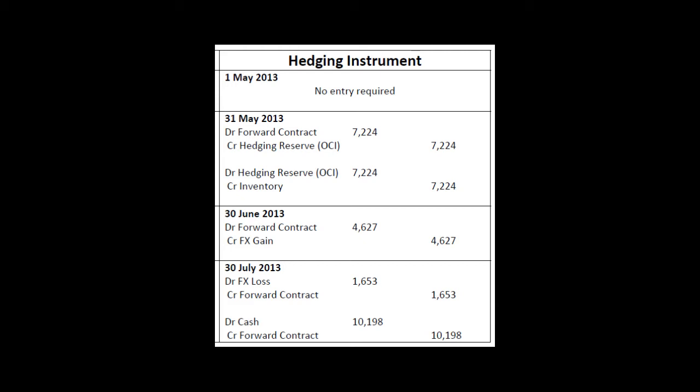So what we have is actually both a cash flow and a fair value hedge because we took out the hedge at this point in time. The actual transaction happened at this point in time and we paid for it here. So between the 1st of May and the 31st of May, that is a cash flow hedge because there is no underlying asset or liability, foreign currency asset or liability on our books. There's nothing there. So we have a cash flow hedge.